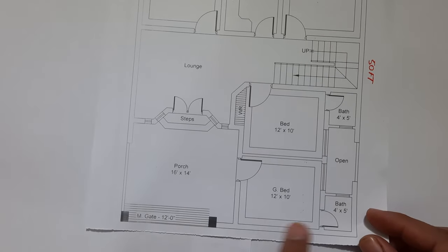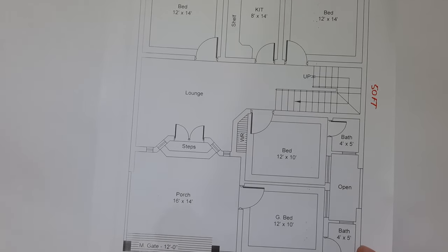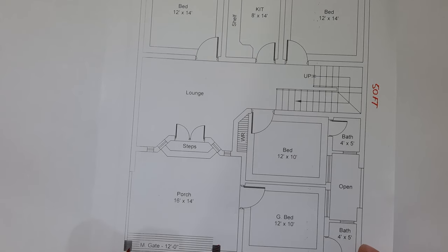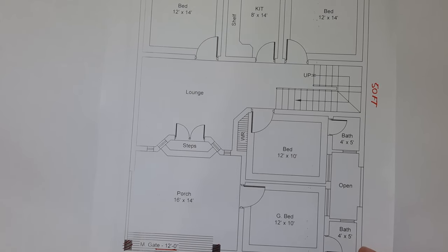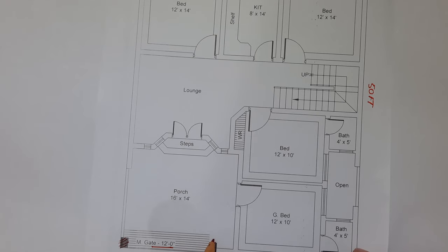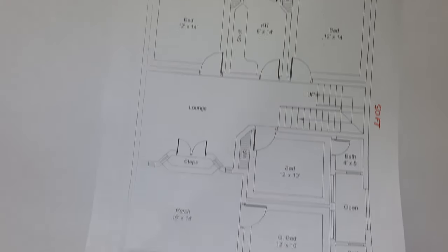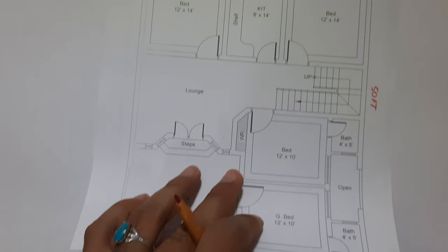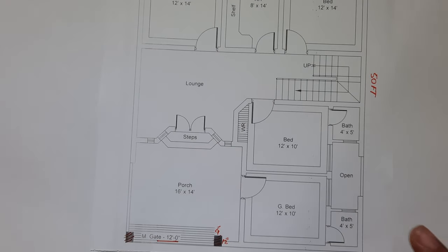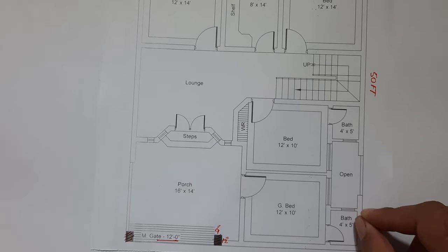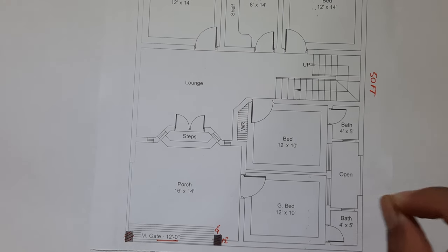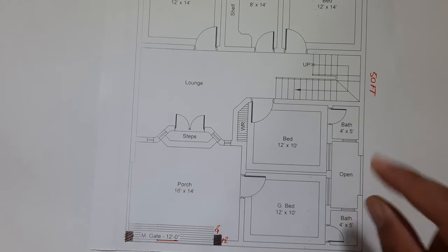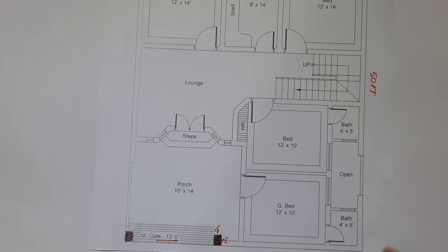This is the front side — the road side. These two columns are for the main entrance, or main gate, which has a width of 12 feet and a column size of 9 by 12 inches. Remember one key principle: always try to place the column at the corner — that will be the best approach.